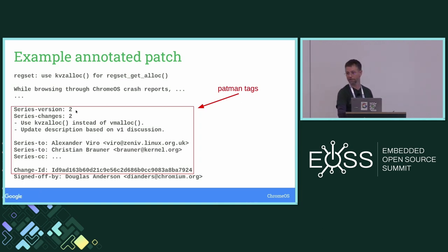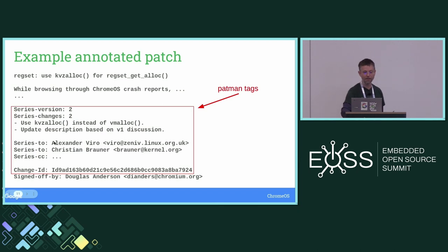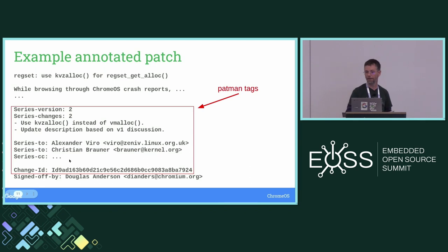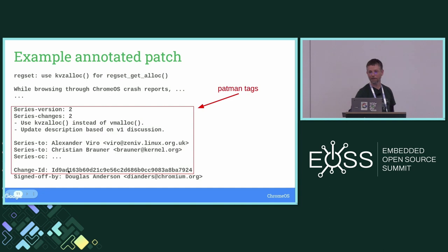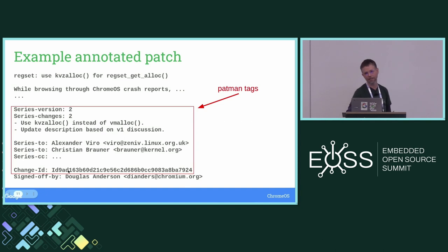Here's what that looks like: in my commit message I have the subject line and patch details. Then in the commit text, I have tags like 'series-version: 2' meaning the whole series is at V2, 'series-changes: 2' with the changes, and 'series-to' and 'series-cc' to send the patch series to specific people. Patman also strips the change-ID but uses it to encode a unique identifier into the message-ID.